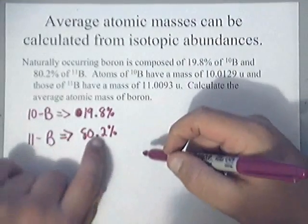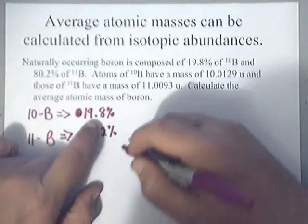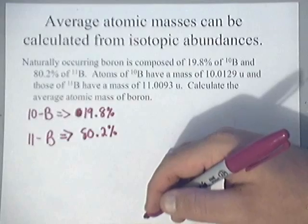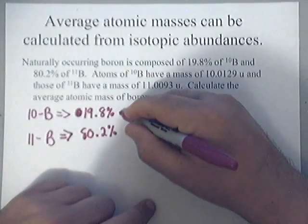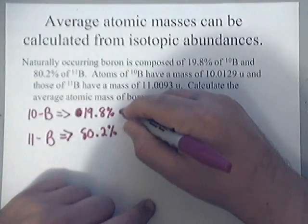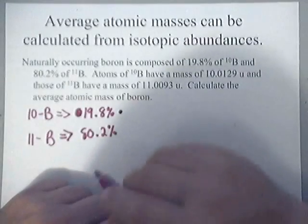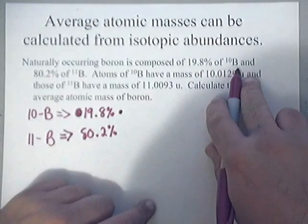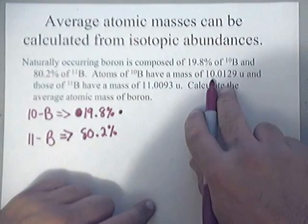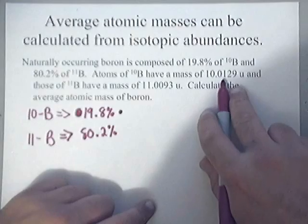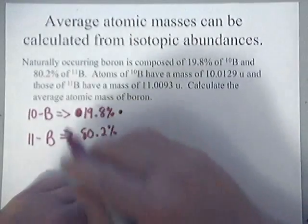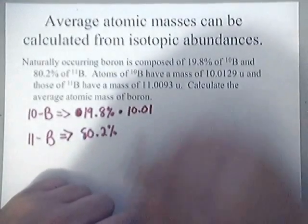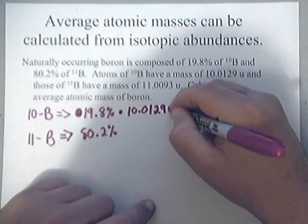We'll see that in the end because when we look at their masses, we're going to take these percents and multiply it by their atomic mass units. So here, we're going to multiply by, we're going to multiply by the 19.8% of boron-10 by the mass of it, the 10.0129 atomic mass units. So that's 10.0129U.